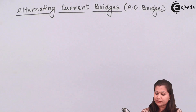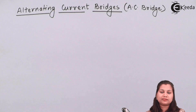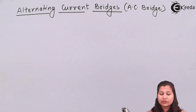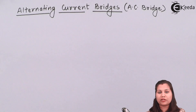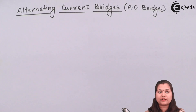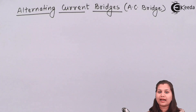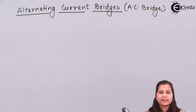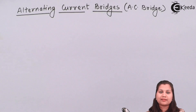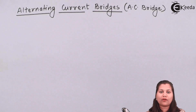The alternating current bridges, or AC bridges, are the most popular, convenient, and accurate instruments used for the measurement of AC resistance, capacitance, and inductance. These bridges are just like DC bridges, but the difference between AC bridges and DC bridges is the power supply. In DC bridges, the power supply provides a DC current, whereas in AC bridges, the power supply is an alternating current power supply.